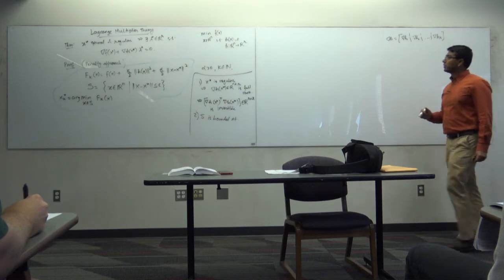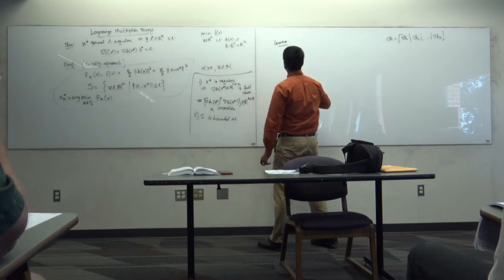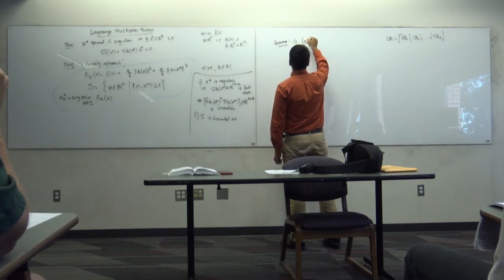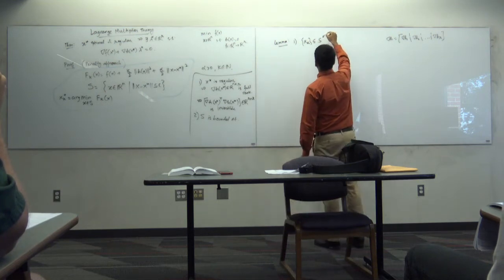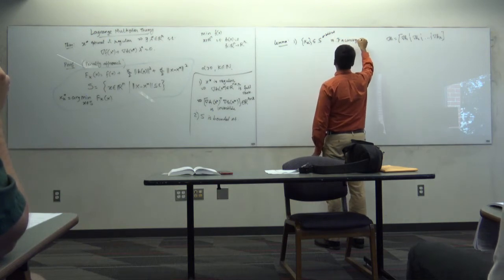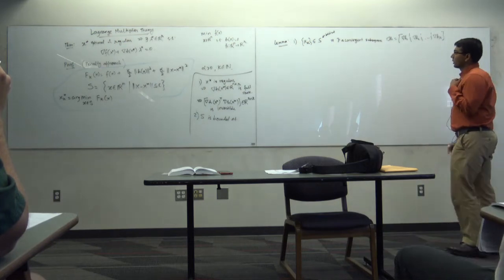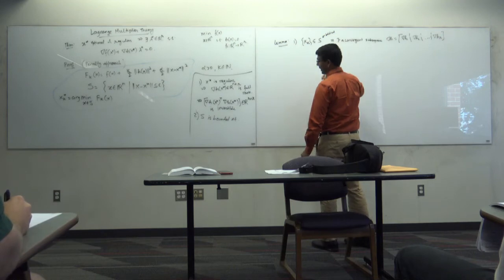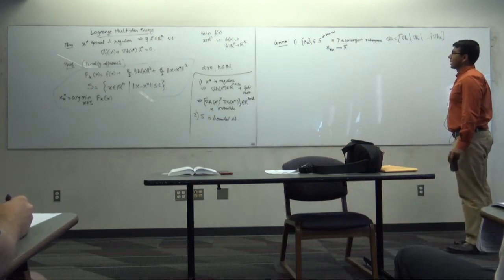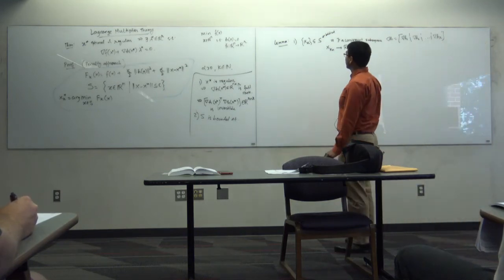I'm going to pull a result from calculus without proving it — a lemma: consider any sequence x_k in S, which is a bounded set. Then there exists a convergent subsequence, which I'll call x_{k_n} that converges to some x̄.